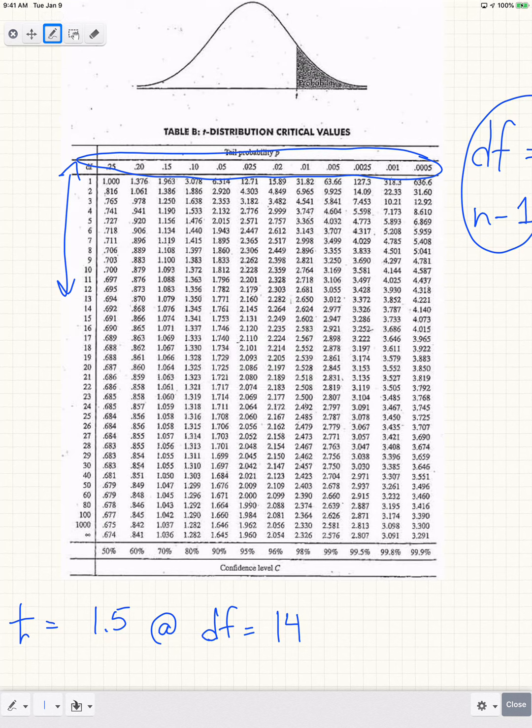So I have 1.5 as my test statistic at 14 degrees of freedom. The way I'm going to read this is simply look for my degrees of freedom to start with, and I can see here is my 14. Then at that 14 degrees of freedom I'm just going to read across that row right there and I'm going to try and find my 1.5. Keep in mind I'm probably not going to find that exact value right there, but I can find what it falls between and then based off of that tell you what the p-value is.